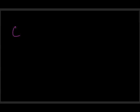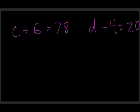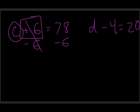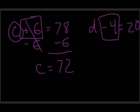Let me do two more as a final review — one addition and one subtraction. Try these yourself: c plus 6 equals 78, and d minus 4 equals 20. Pause the video, give them a shot, then resume. For c: subtract 6 from both sides, leaving c equals 72. For d: since we're subtracting in the original, add 4 to both sides — keeping the scale even — leaving d equals 24.